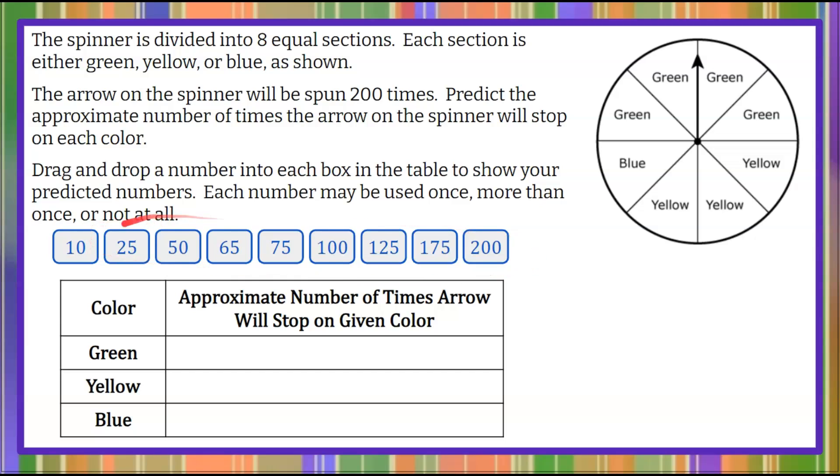So we have these number values to pick from, and we're going to determine out of the 200 times how many of our spins will land on green, yellow, or blue. Here's where you pause the video, do your best work, and then come back and hit play to see mine.